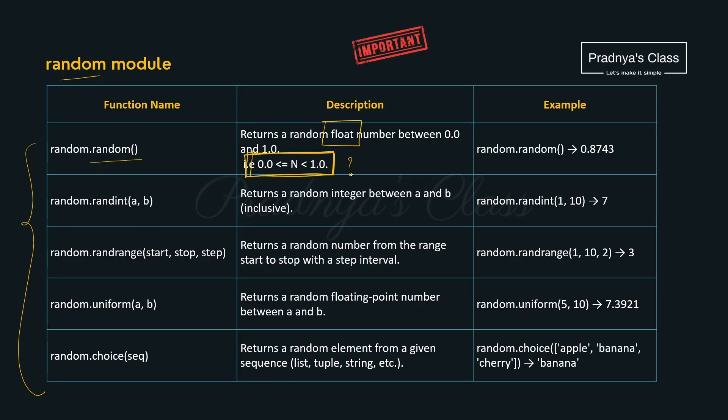But now you may raise a question. What if we need to provide the range? In that case you can use uniform function. It takes the range A to B. It means it will provide the floating number in between A and B.